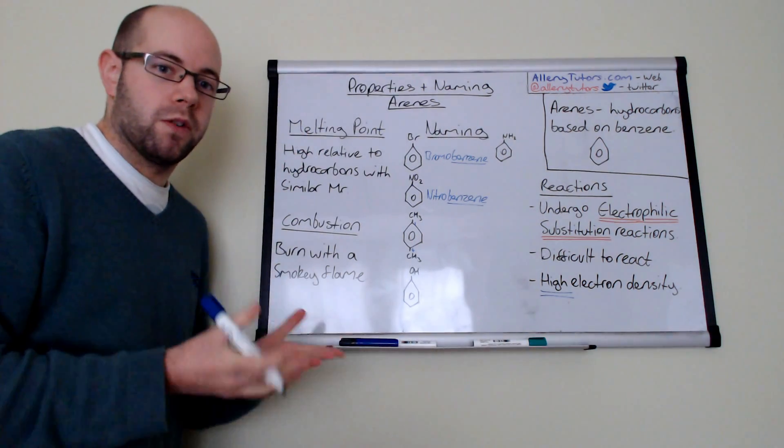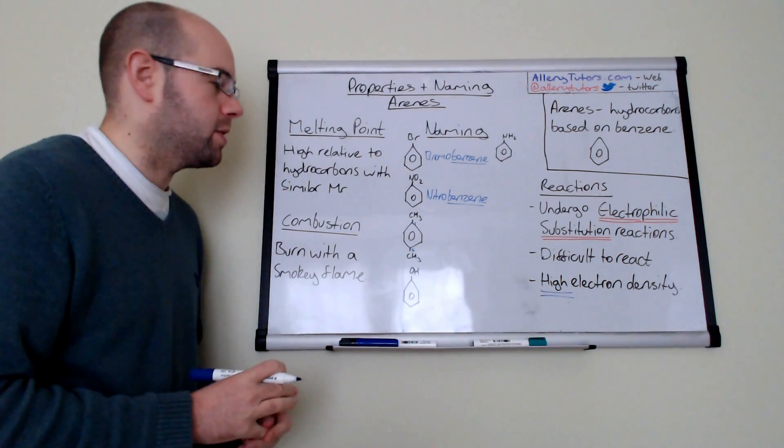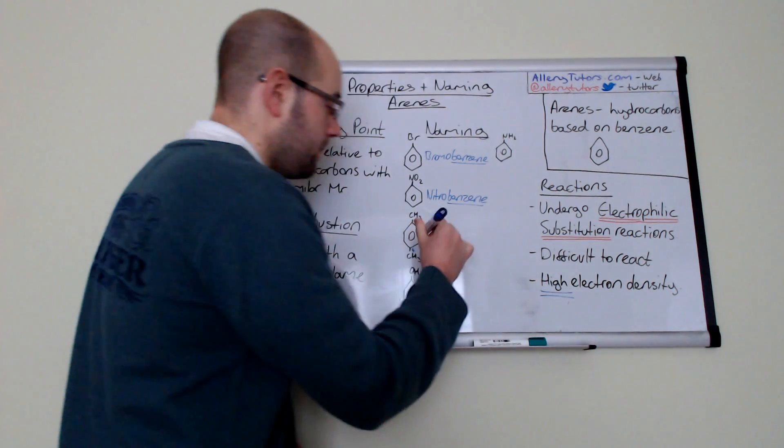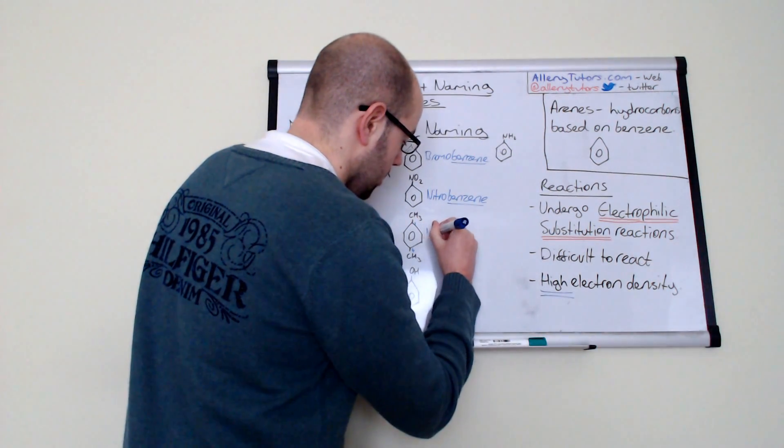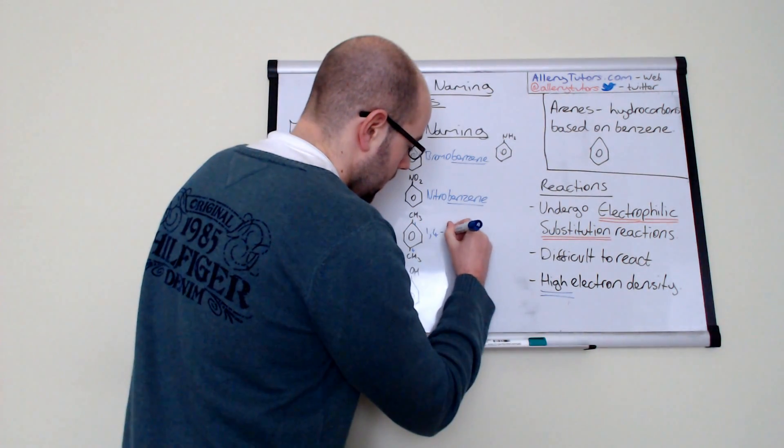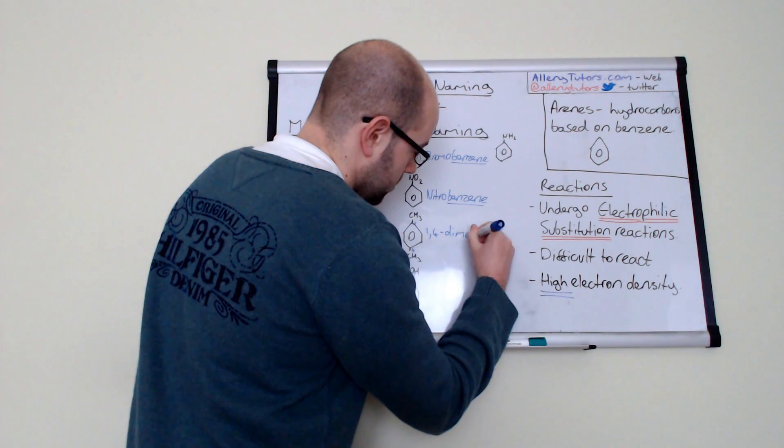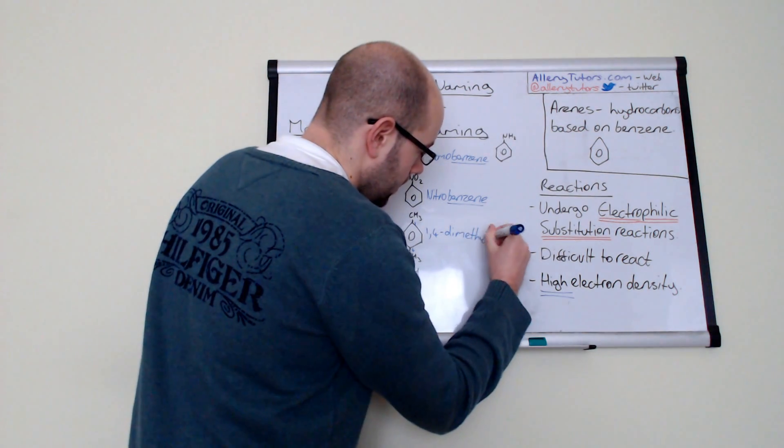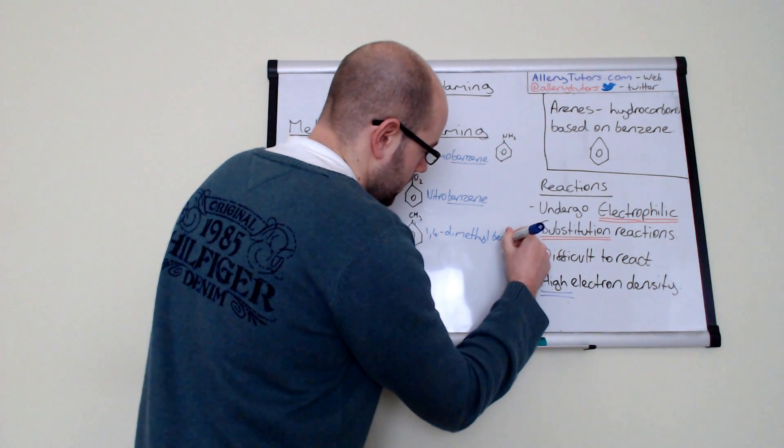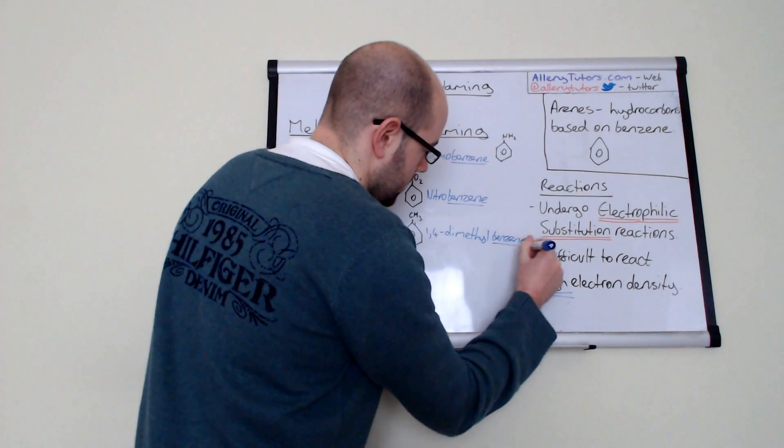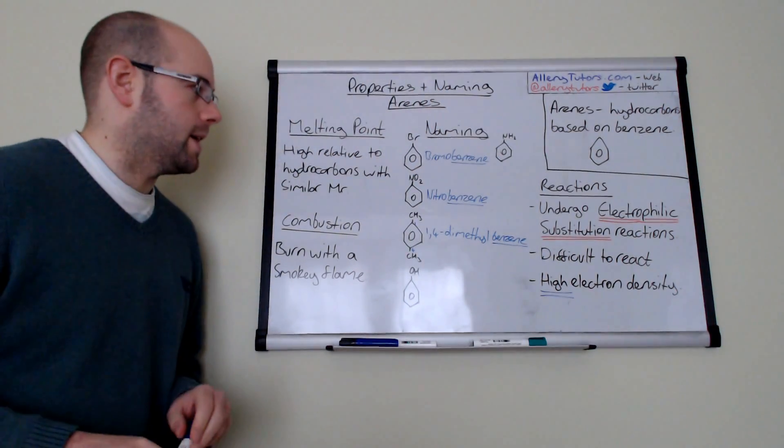So in this case, this one is just one, comma, four, dimethyl, because we have the same group. And then we have benzene that just gets stuck on the end like that. So it's really easy to name.